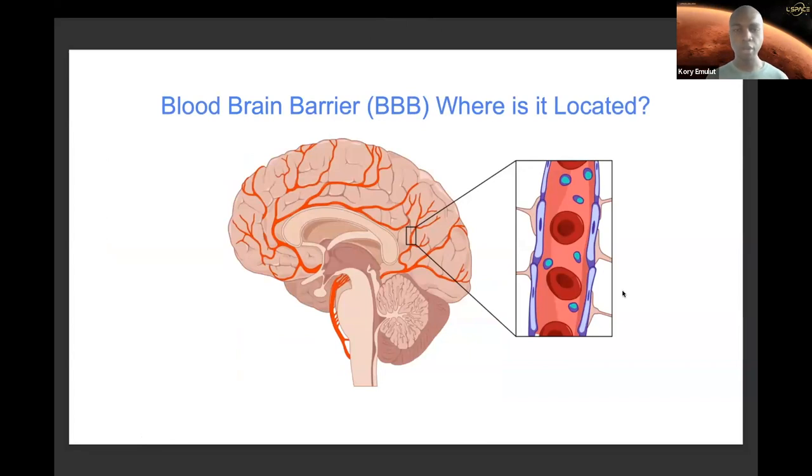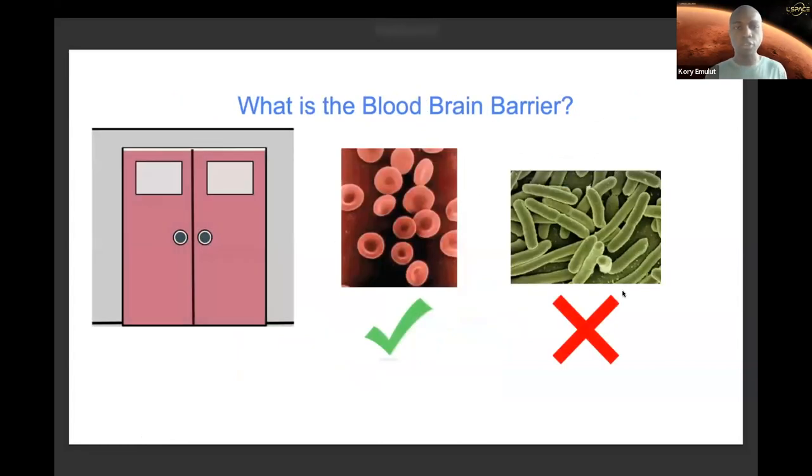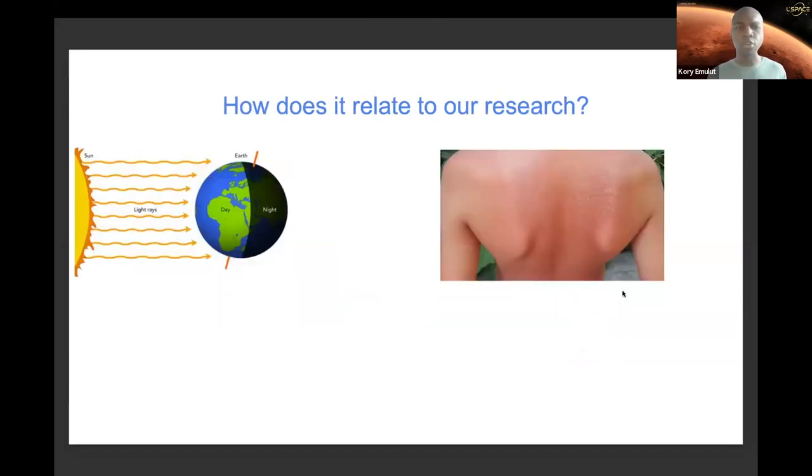So the blood-brain barrier—what is it? It's located in the capillaries of the brain. Think of it like a door to a VIP club. Those on the list get let in, those who are not on the list get kicked out. Those on the list are things like cells and blood vessels; those who aren't are pathogens, toxins, viruses, and bacteria.